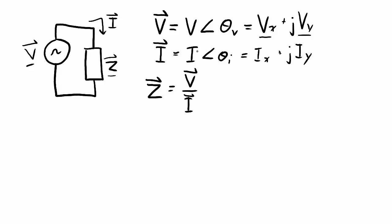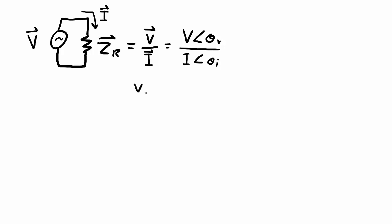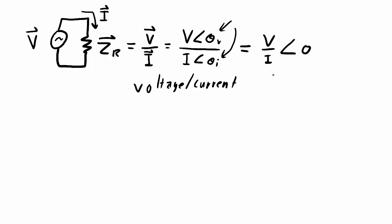The impedance Z has an effect on both magnitude and phase angle. If the element in the circuit is a resistor, the impedance of that resistor Zr is the ratio of voltage over current. I can split these into magnitude and phase angle components. In a resistor, voltage and current are in phase with each other, so theta_V and theta_I are equal, giving a result of V over I with a phase angle of zero — which is simply R with a phase angle of zero, where R is the resistance.